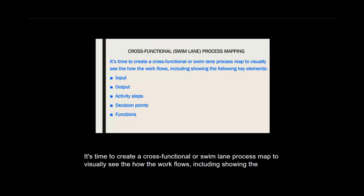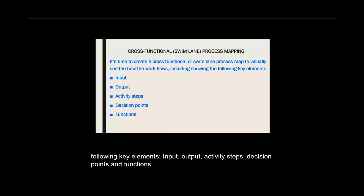It's time to create a cross-functional or swim lane process map to visually see how the work flows, including showing the following key elements: input, output, activity steps, decision points, and functions.